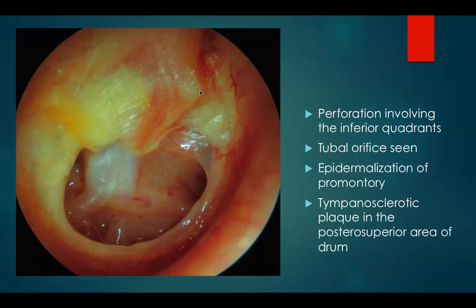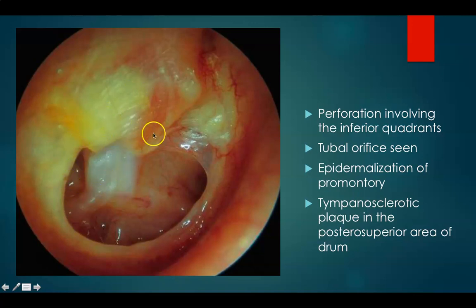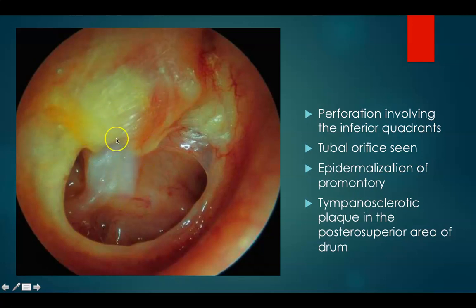This is a perforation involving the inferior quadrants of the tympanic membrane of the right ear. You can see the tubal orifice and round window niche. There is epidermalization of the promontory — the epidermis has grown over the promontory. There is also a tympanosclerotic plaque in the posterior superior area of the drum.